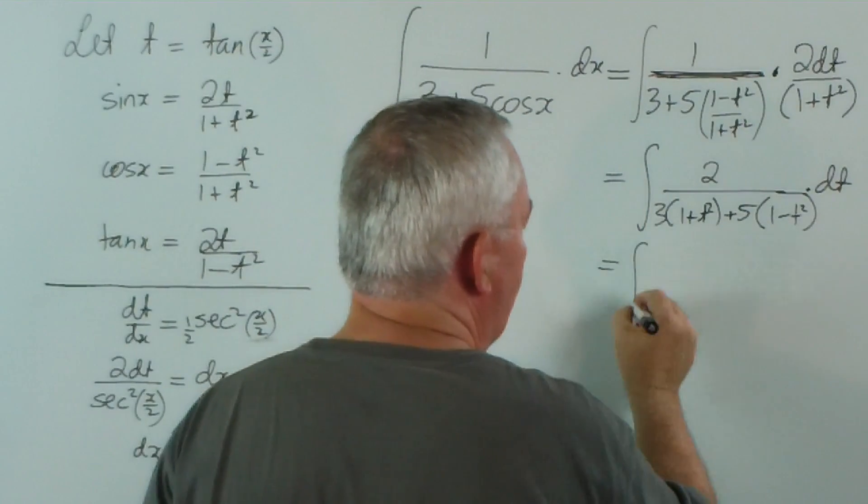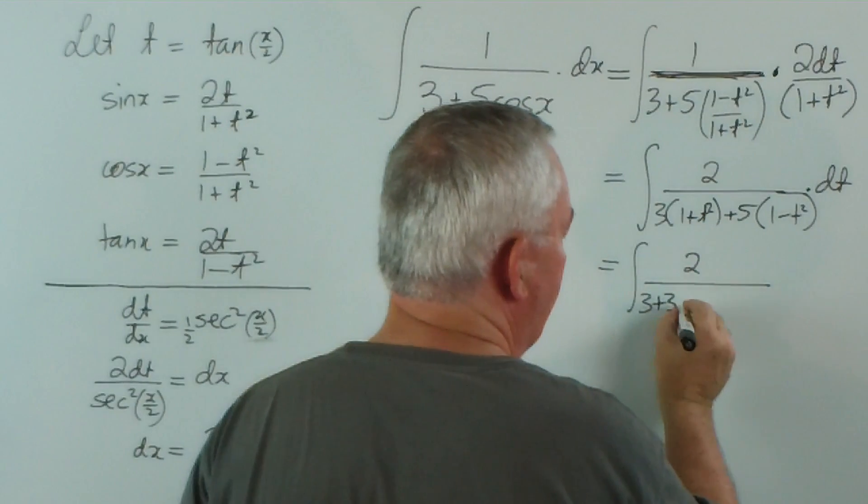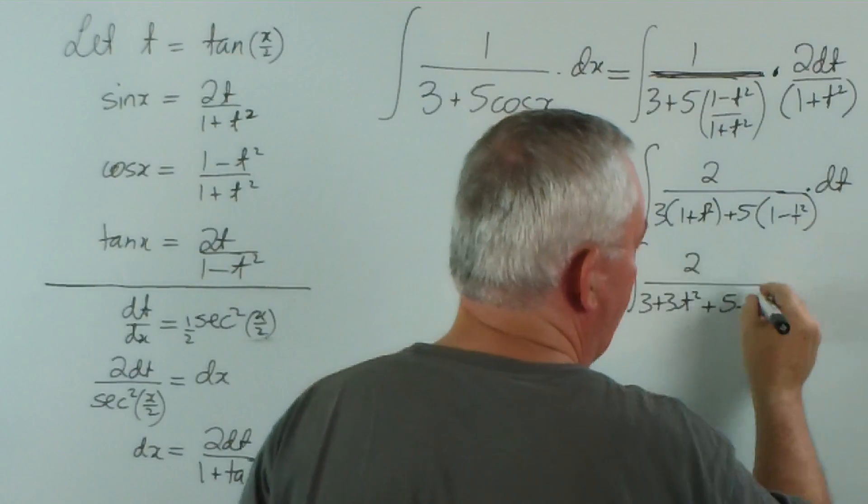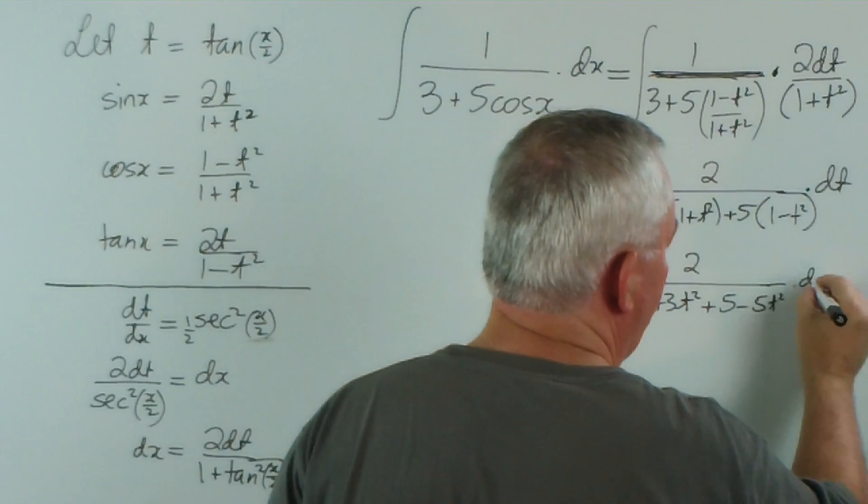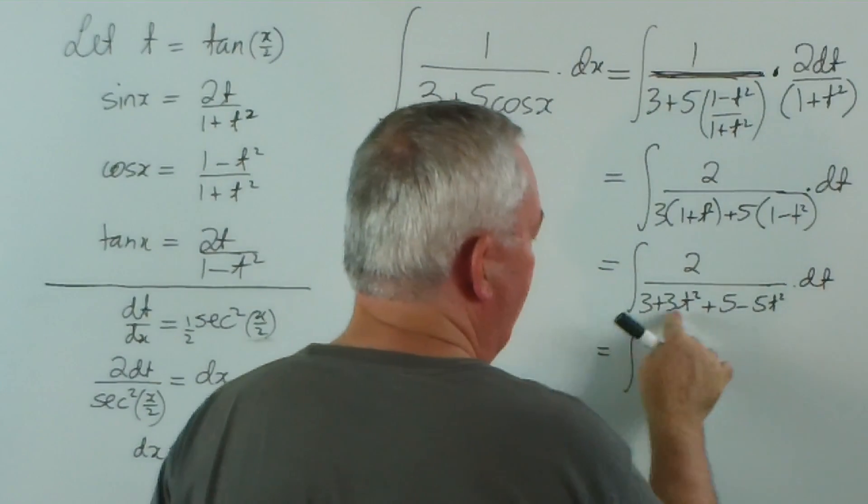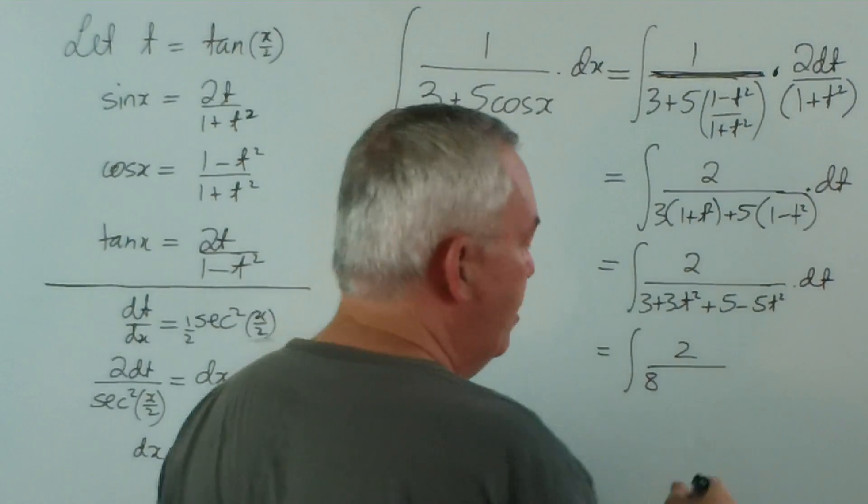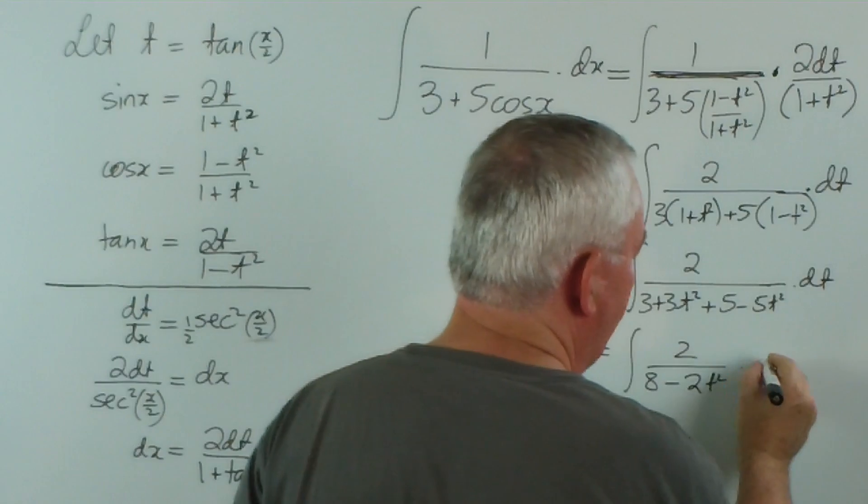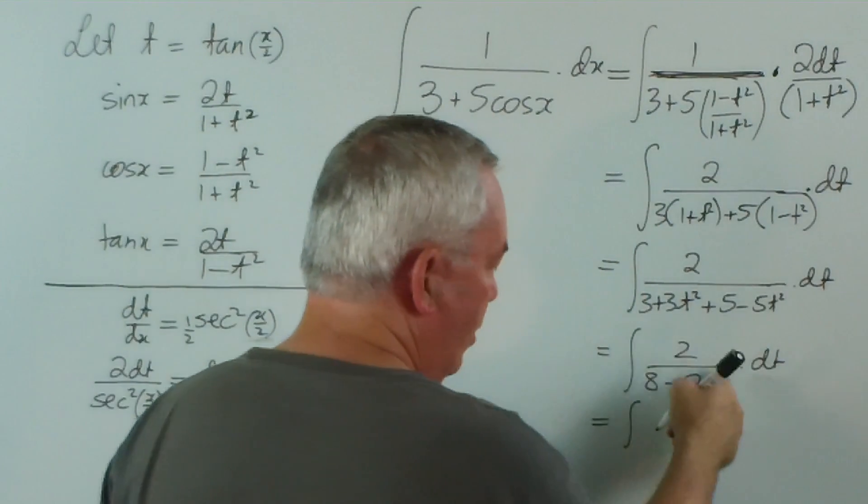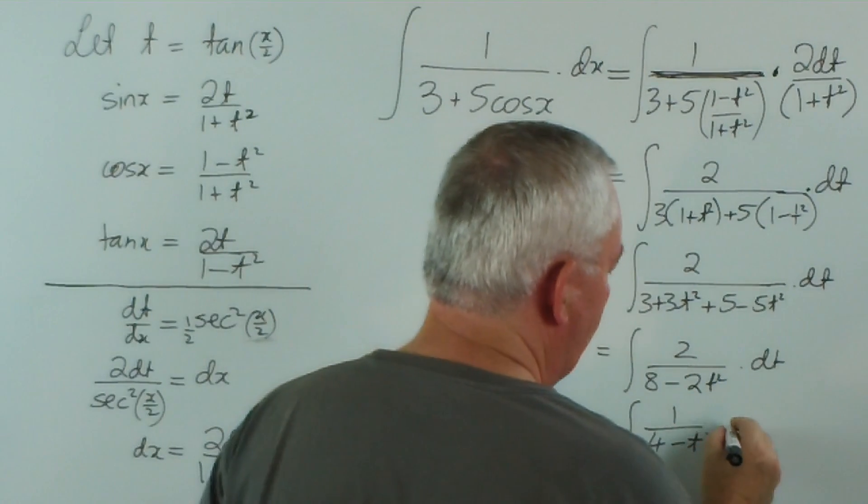And if I simplify, I get 3 + 3t² + 5 - 5t², which will give me the integral of 2 over... and 3t² minus 5t² is minus 2t². And that would be the integral of, dividing through by 2, 1/(4 - t²) dt.